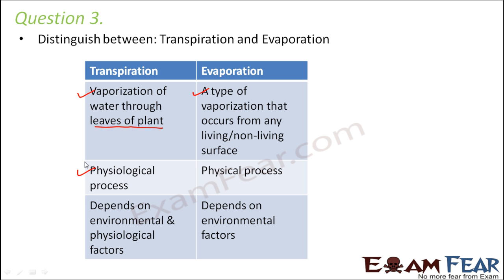Transpiration is a physiological process related to the life cycle of a plant. It depends on factors like the number of stomata on a leaf — fewer stomata means a lower rate of transpiration. It depends on the structure and nature of the leaf or plant. Evaporation, however, is purely a physical process that depends entirely on environmental conditions: as long as there is enough temperature and energy, evaporation will take place.